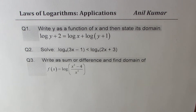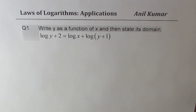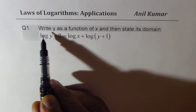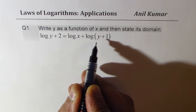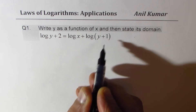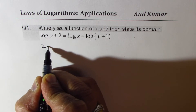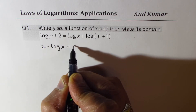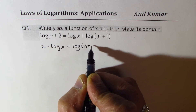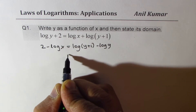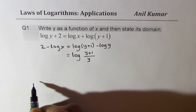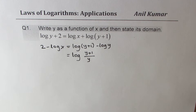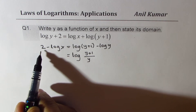Question one: write y as a function of x and state its domain. We are given log(y+2) = 2·log(x) + log(y+1). Let's isolate y. First step: bring log(x) to the left side, so we get log(y+1) − log(y) on the left. The right side can be combined easily as log((y+1)/y).